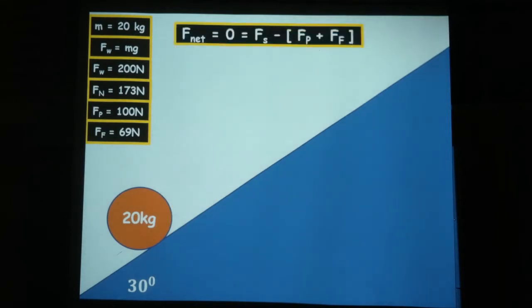Now, the net force has to equal 0. That means that the Sisyphus force minus the sum of the push-pull force and the friction force, remember, those are the forces that are acting against Sisyphus. The natural tendency for the boulder to move down the hill and the frictional force that is also working against Sisyphus.